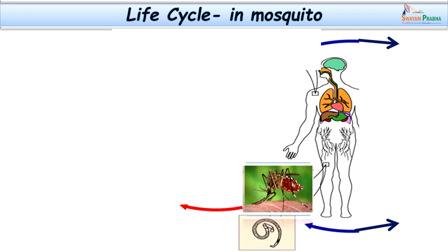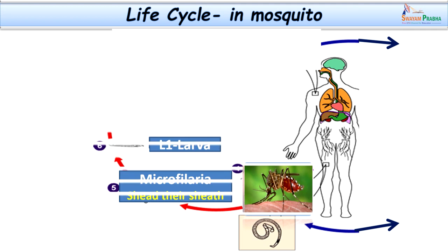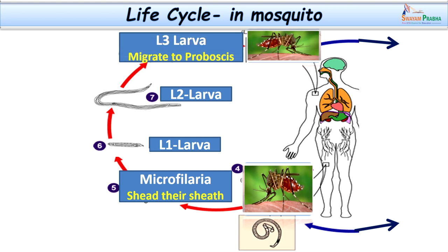Once the mosquito picks up the microfilaria, unsheathing takes place — they shed their sheath and enter into the gut, further going to the thoracic muscles. At the same time, they mature from L1 to L3 forms. From the thoracic muscles they enter into the proboscis of the mosquito, where the completely matured L3 larvae are ready to infect the next host. An important point: Culex mosquitoes are nocturnal, and the release of microfilaria into circulation also takes place at night — from 10 pm to 4 am. This is when mosquitoes take their blood meal and pick up microfilaria, continuing the life cycle.